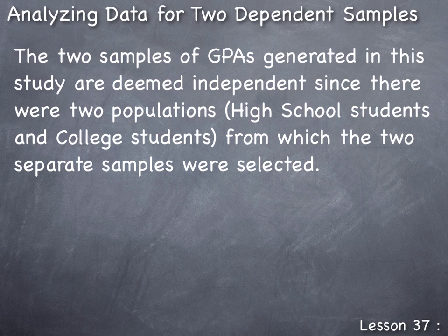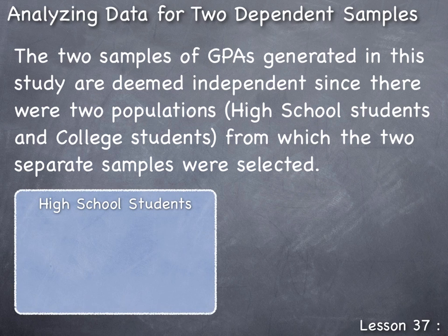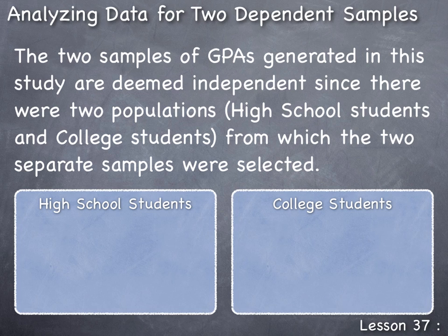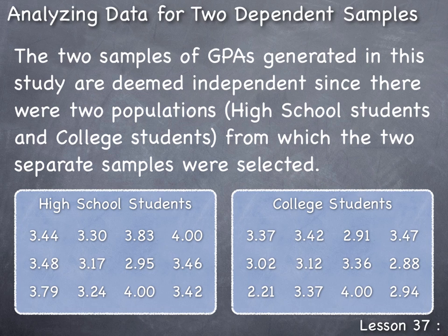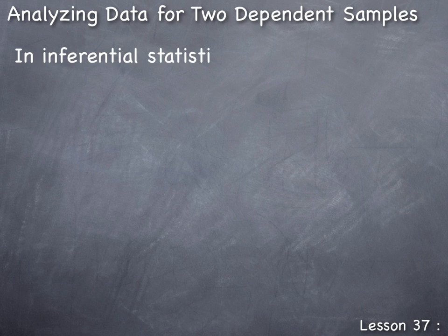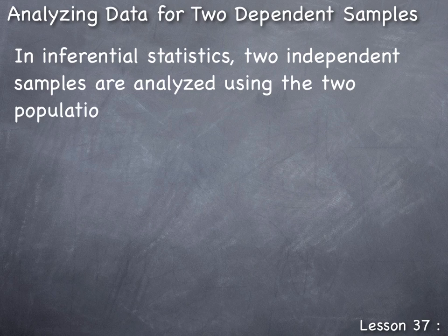So two independent samples occur when there are two separate populations. In this case we had a population of high school students and a population of college students, and then separate random samples are selected from each of the two populations. A random sample of high school students had their GPAs recorded, then a second separate sample of college students had their GPAs recorded, giving us two independent samples.